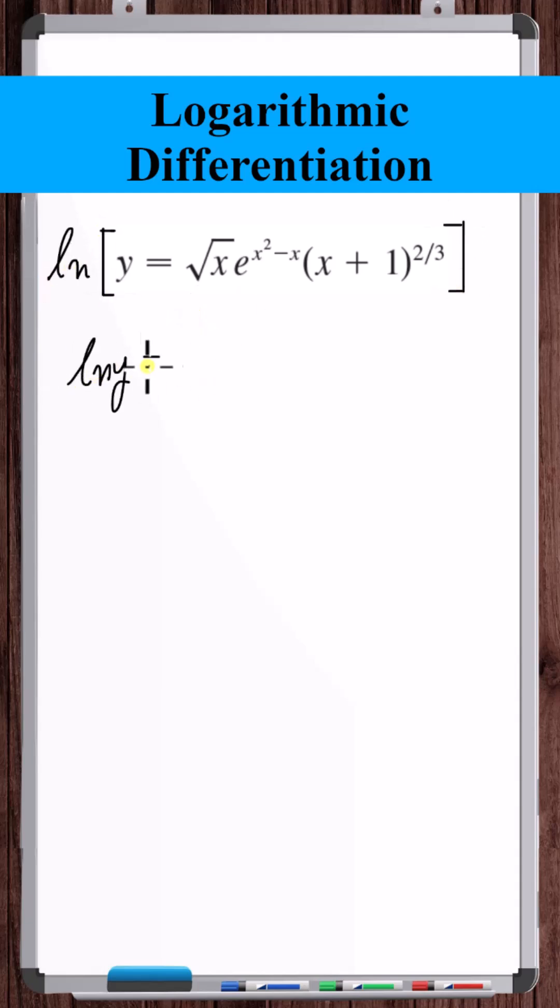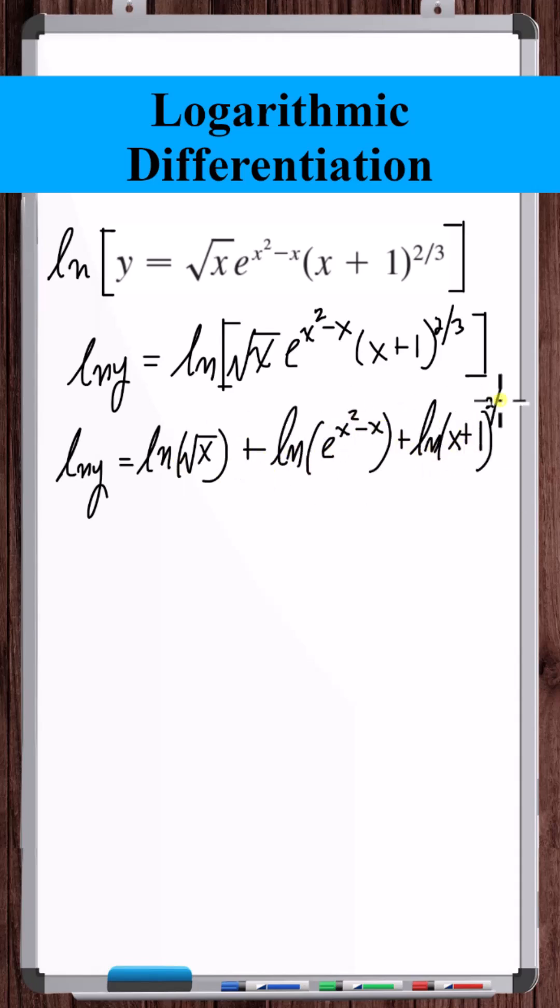Let's take the natural log of the entire equation. Now we can split this up into three separate logarithms. Now we can bring these exponents to the front of the logarithms.